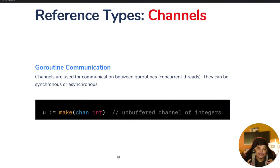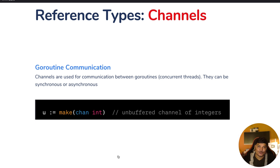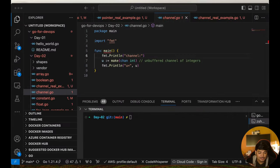Now let's learn about channels, also called goroutine communication. Channels are used for communication between goroutines or concurrent threads, and they can be synchronous or asynchronous. To define a channel variable: 'u := make(chan int)' — using the make keyword, the chan keyword for channel, then the data type.